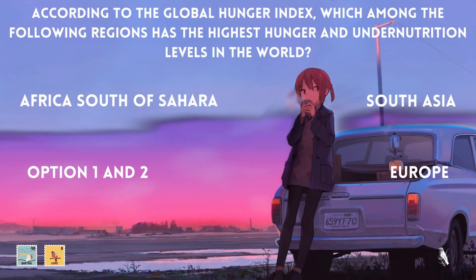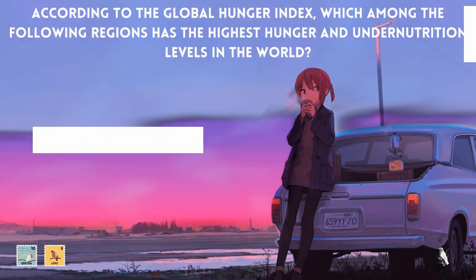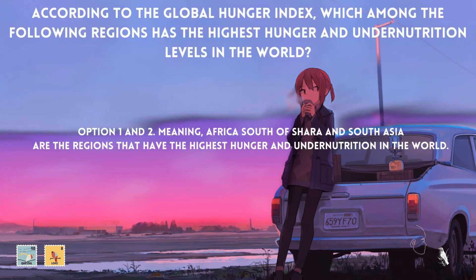According to the Global Hunger Index, which among the following regions has the highest hunger and undernutrition levels in the world? Is it Africa South of Sahara, South Asia, option 1 and 2, or Europe? The answer is option 1 and 2, meaning Africa South of Sahara and South Asia are the regions that have the highest hunger and undernutrition in the world.